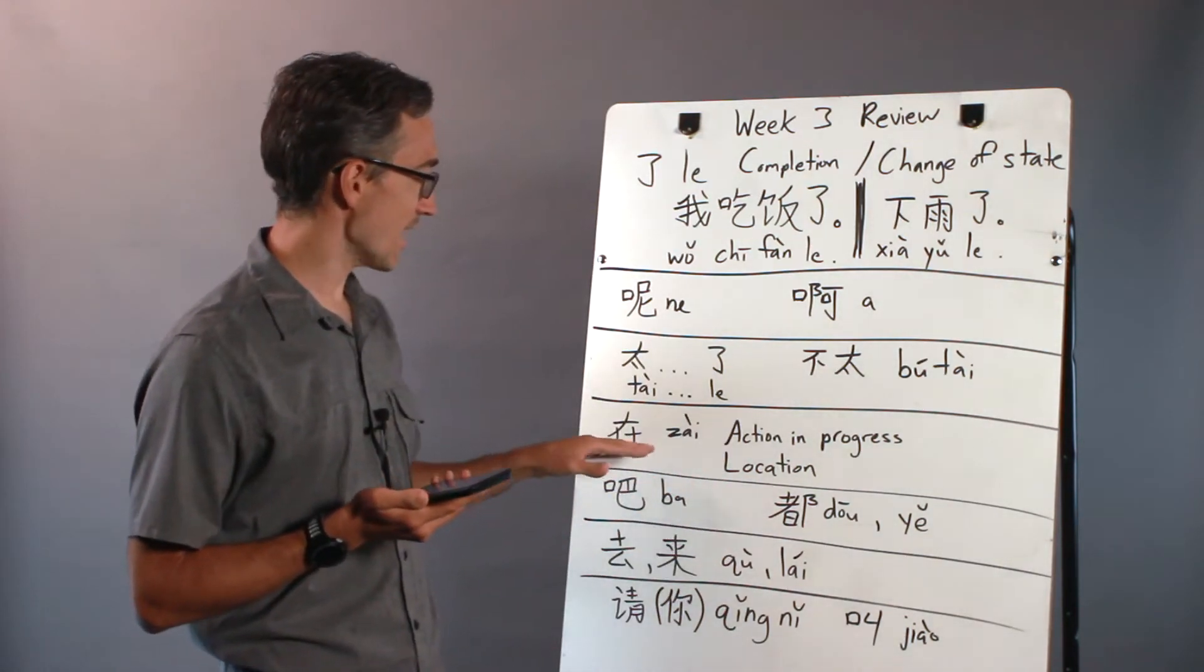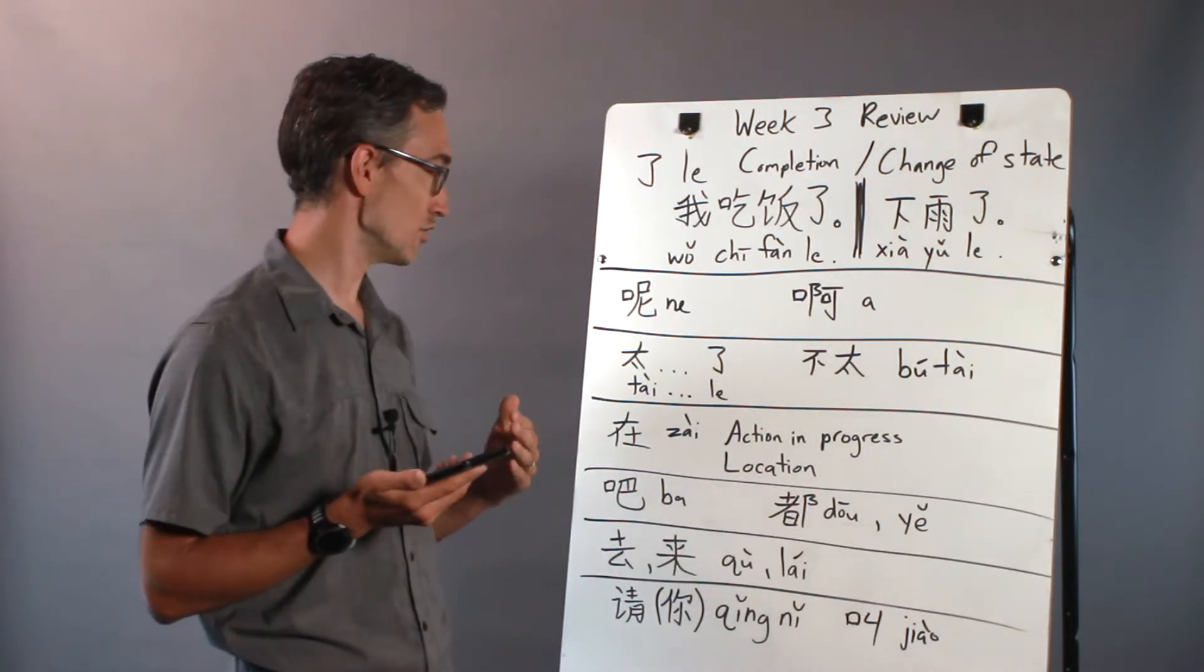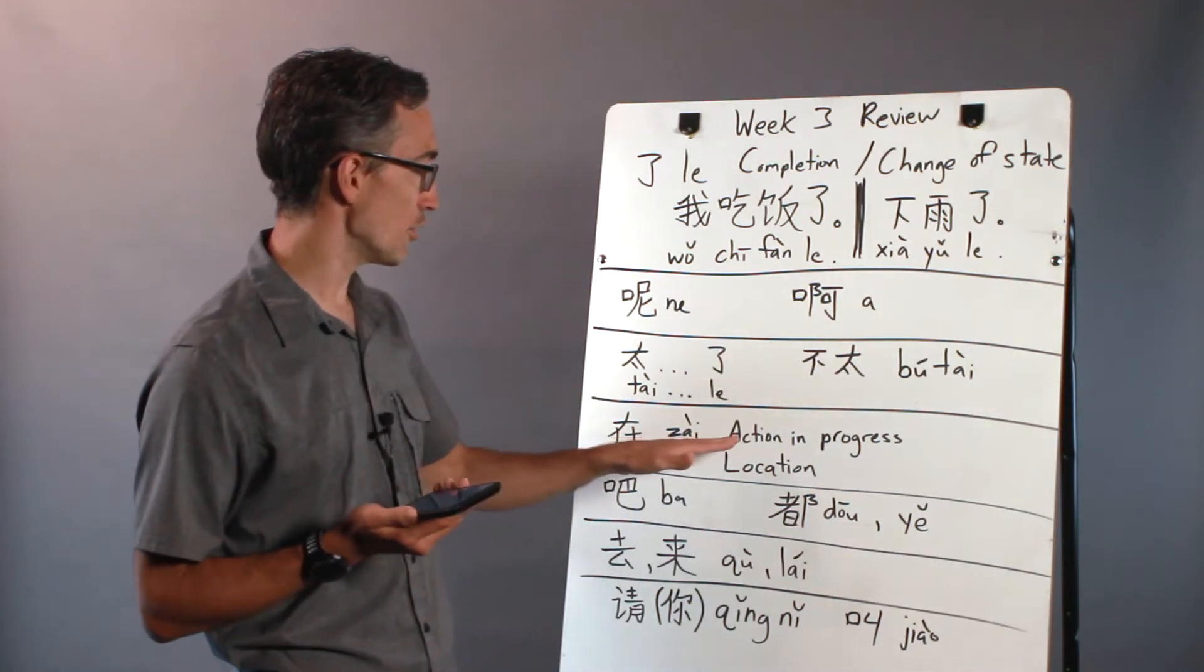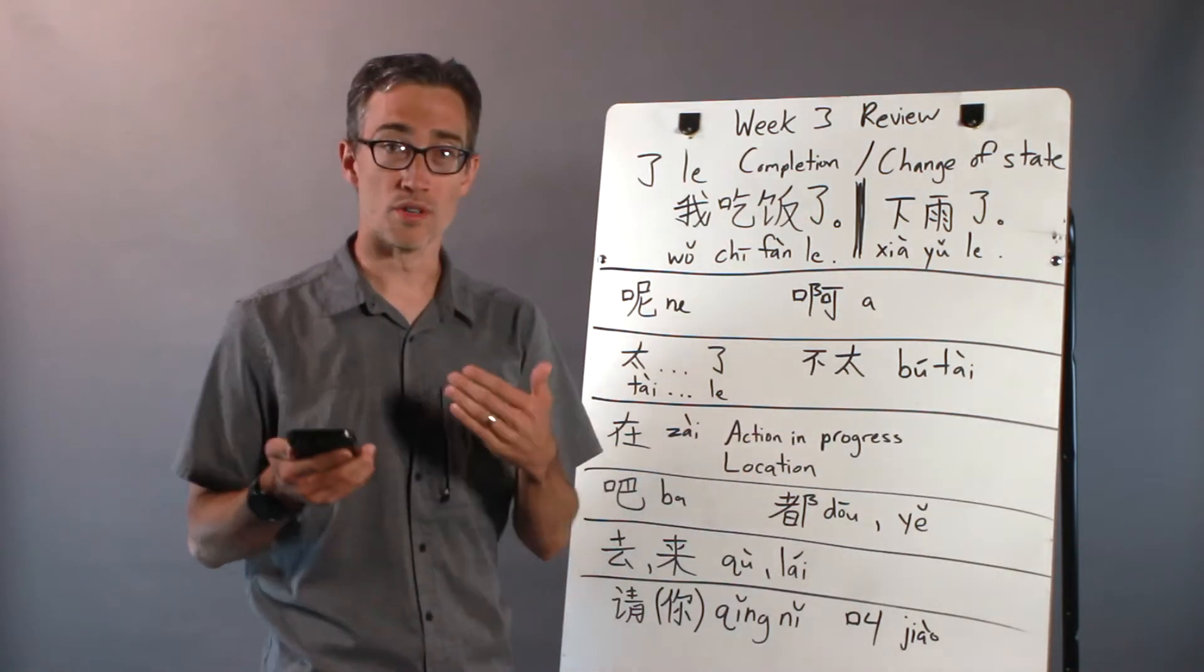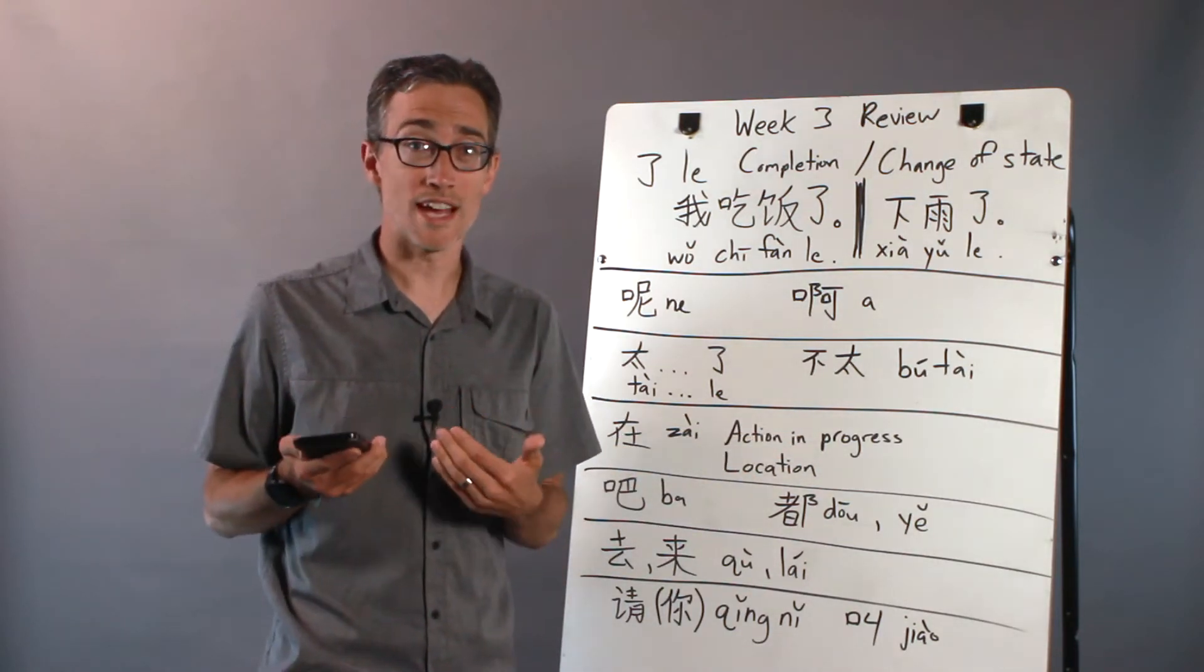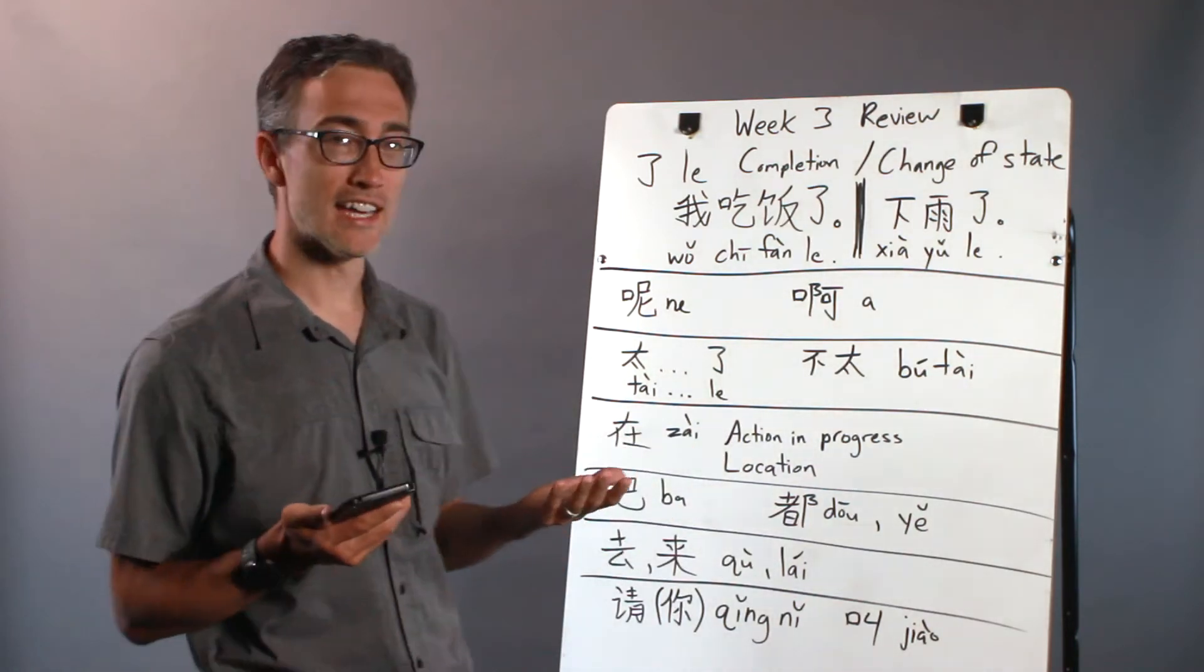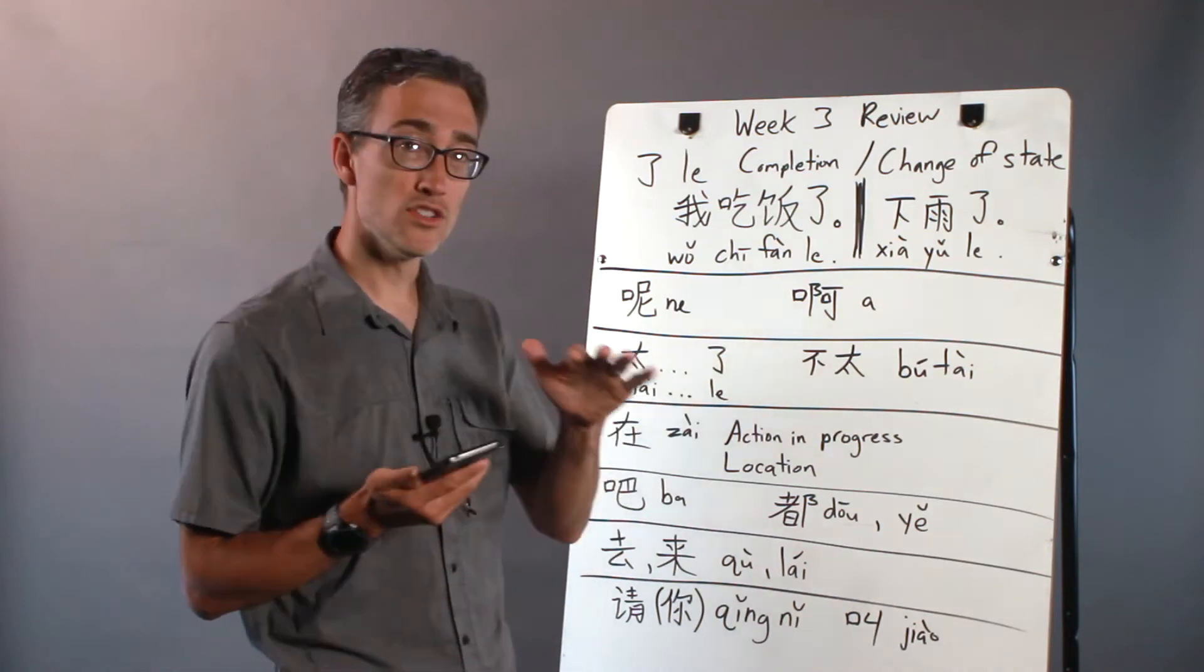And then we talked about 在. 在 is a powerful little word that has two very common uses and they're actually quite different. One, if it's put right before a verb it means an action in process. So 我在吃饭, I am currently eating. It's kind of like the ing verb, an ing ending to a verb in English. So that's one use.